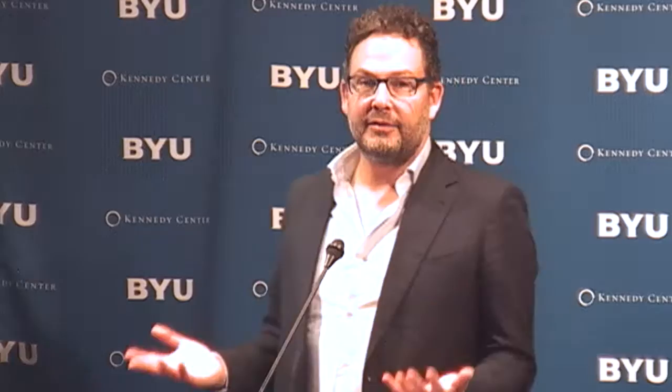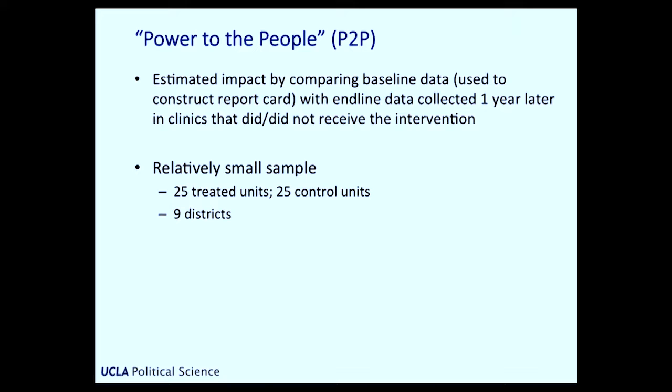It's an incredibly intense, multifaceted intervention. The treatment effects were estimated by comparing baseline data — which informed the report cards — with end-line data collected a year later, both in the clinics that did and didn't receive this multifaceted treatment. It was a relatively small sample: just 25 health centers and associated catchment areas that got the treatment and 25 that were randomly assigned to control, spread over nine districts in Uganda. But notwithstanding the small sample size, Bjorkman and Svensson report these huge, almost unbelievably large effects. Infant weights were significantly higher in the units that got this treatment, under-five mortality was 33% lower after one year, immunization rates were higher in the treated units, and staff absenteeism and waiting times at clinics were lower.